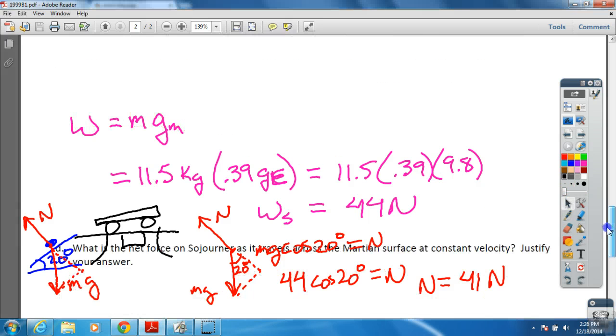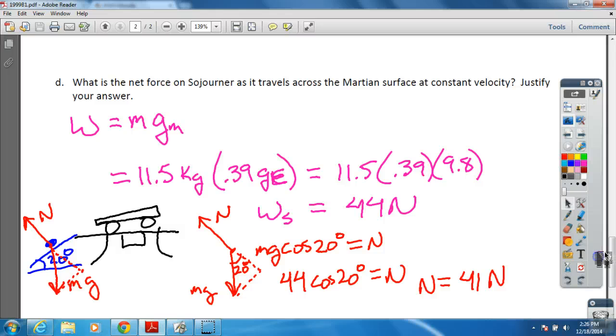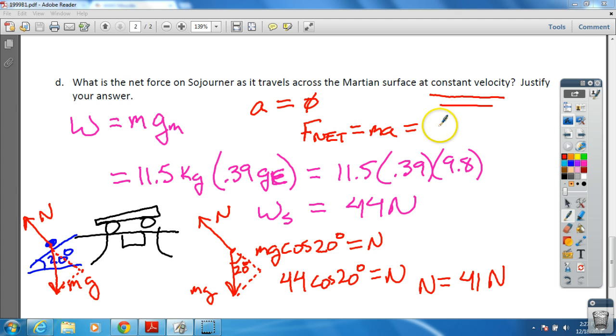The last part is Part D. It says, what is the net force on Sojourner as it travels across the Martian surface at a constant velocity? Well, if it's a constant velocity, I know that my acceleration is equal to zero. If my acceleration is equal to zero, then I know that my net force has got to be equal to ma, and so that would be equal to zero also.